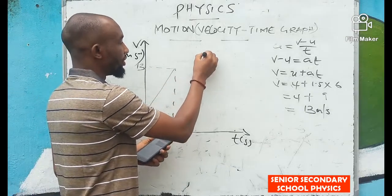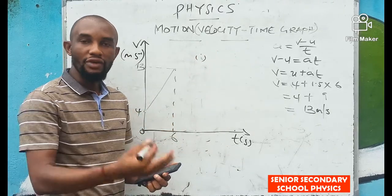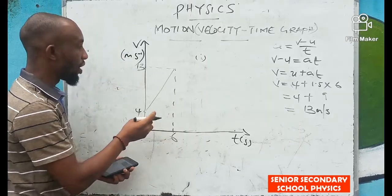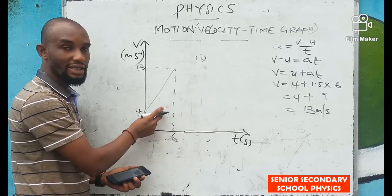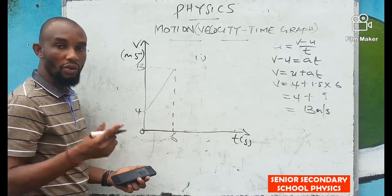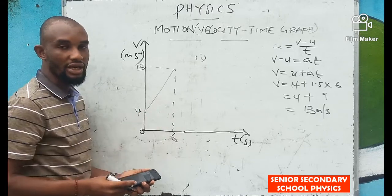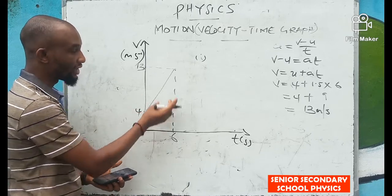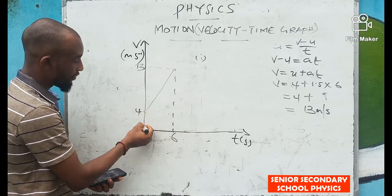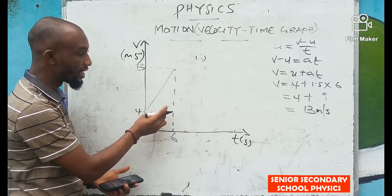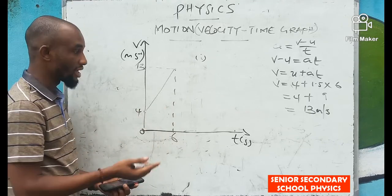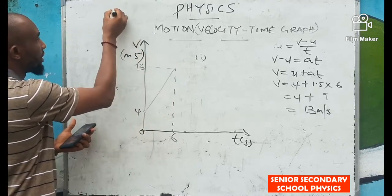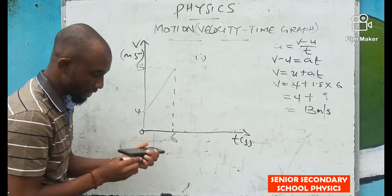For the average velocity: 'average' means total, and velocity is distance over time, so average velocity = total distance / total time. To find distance from a velocity-time graph, we consider the area under the graph. From this graph, the shape is a trapezium. The area of a trapezium is: ½ × (sum of the two parallel sides) × height.